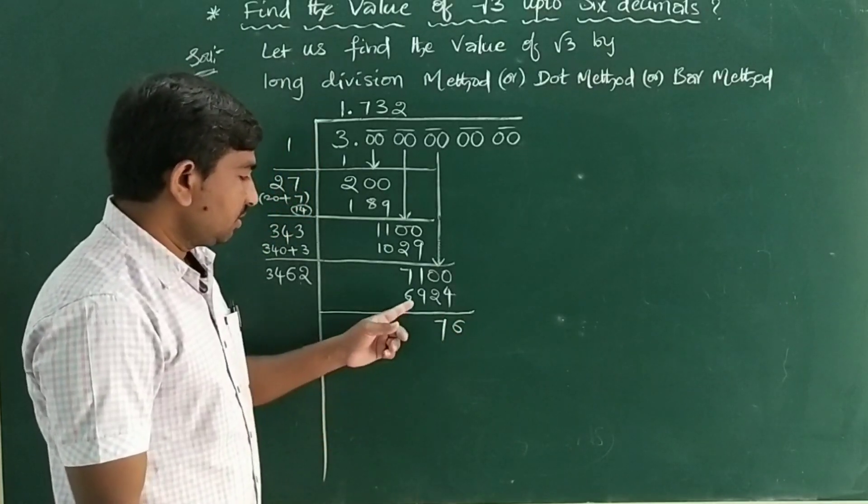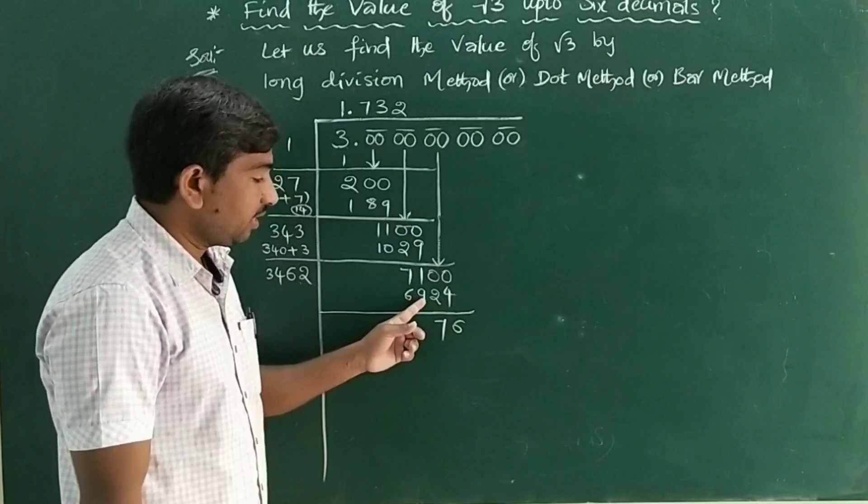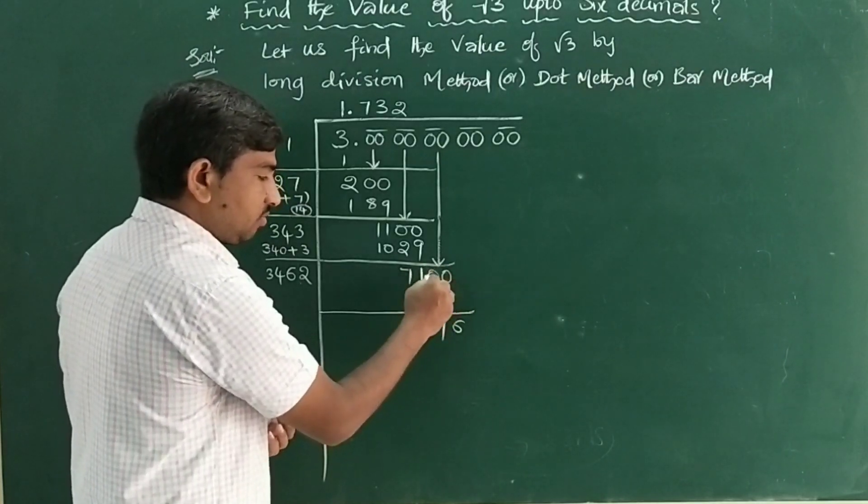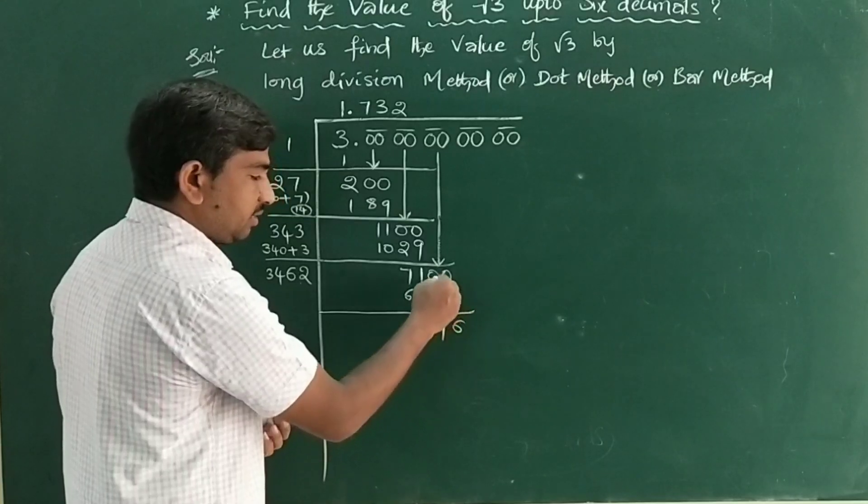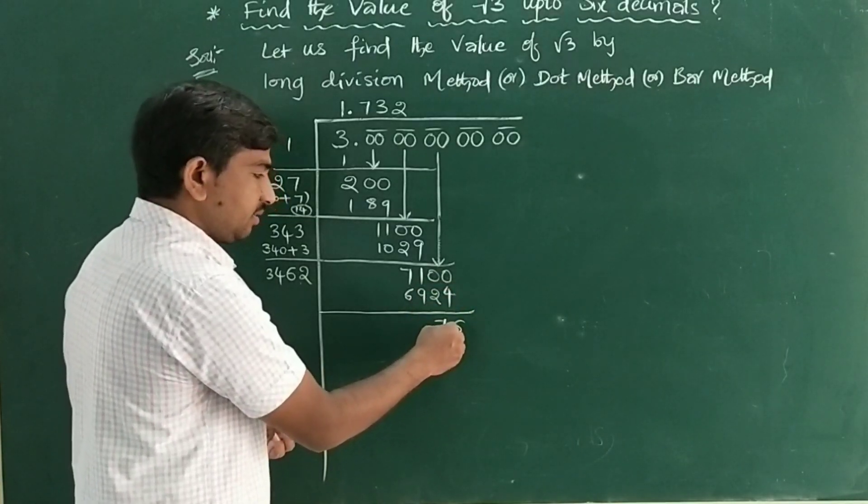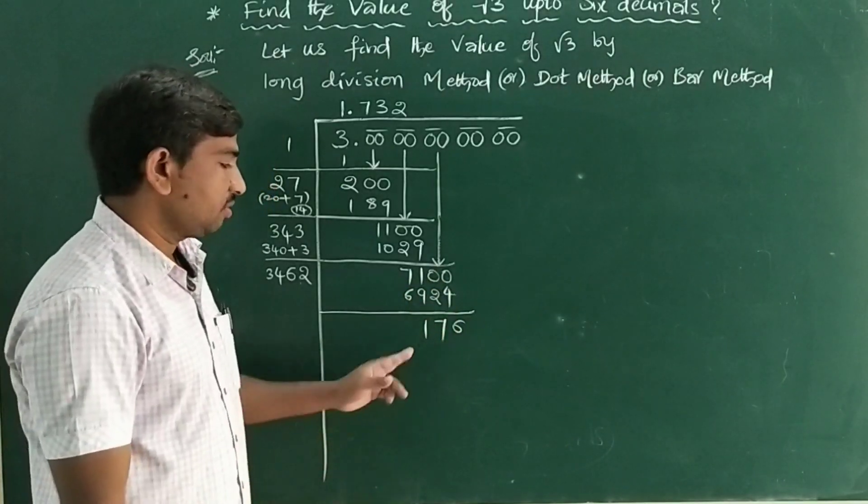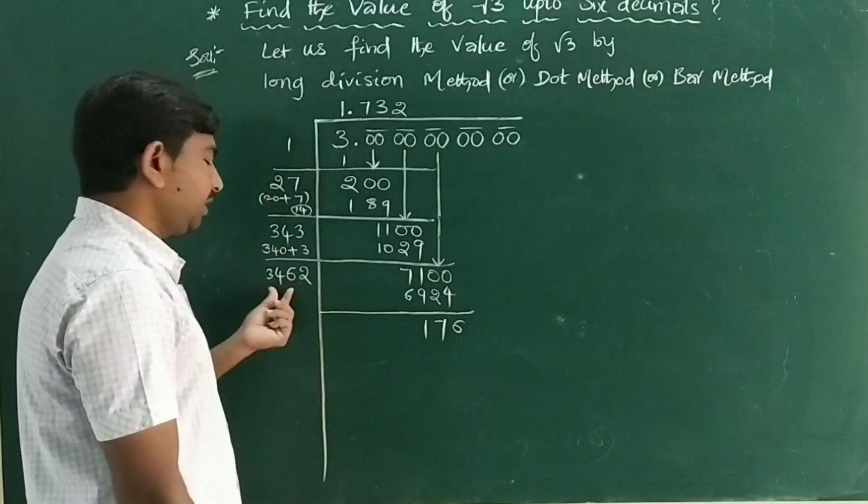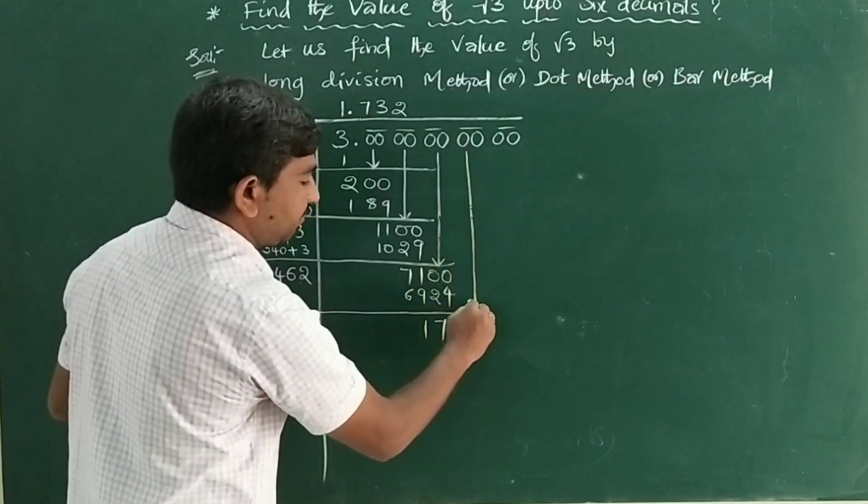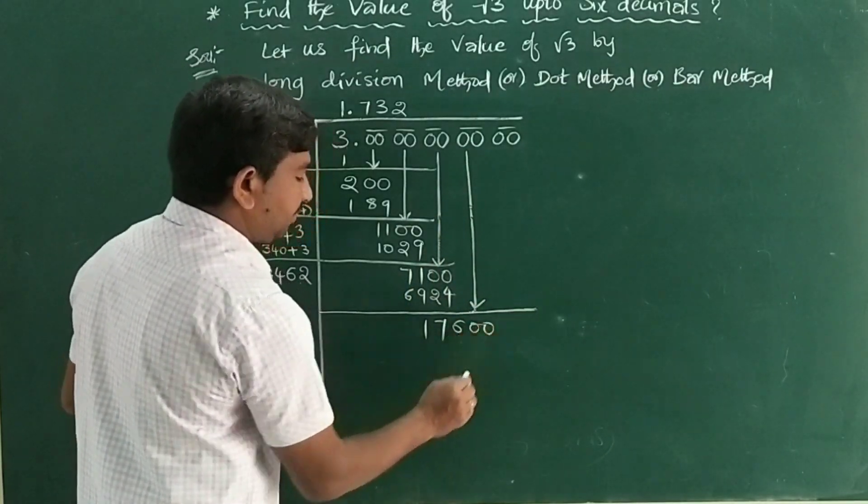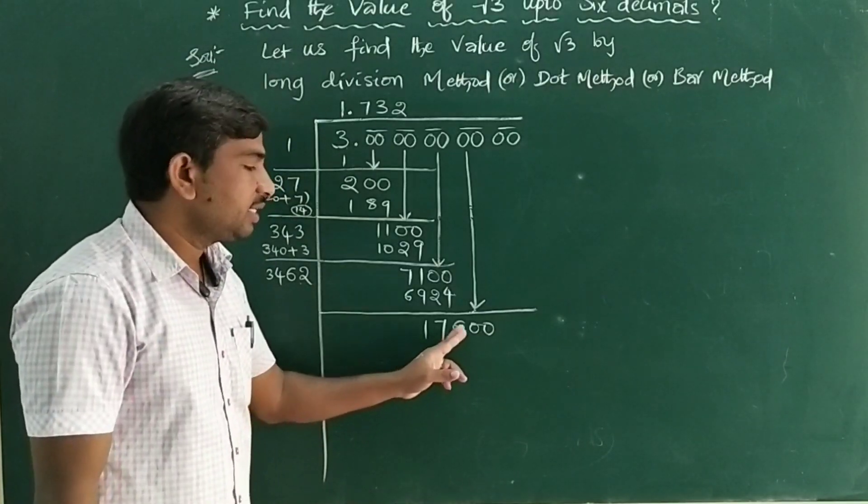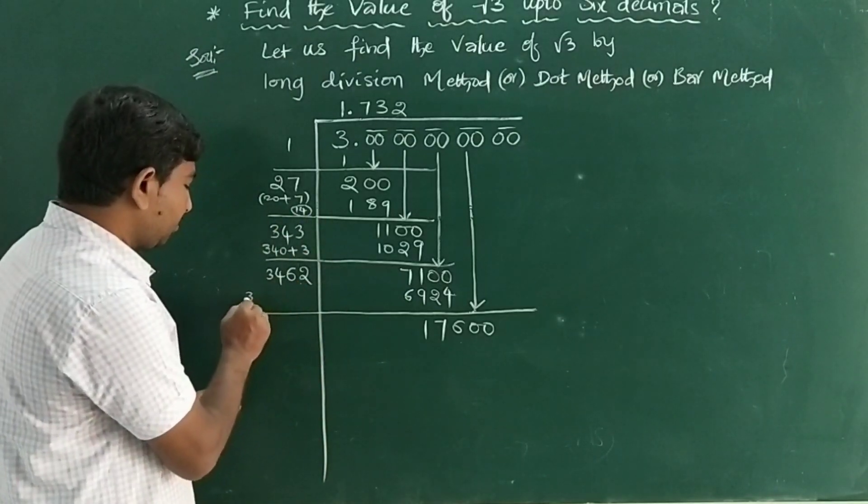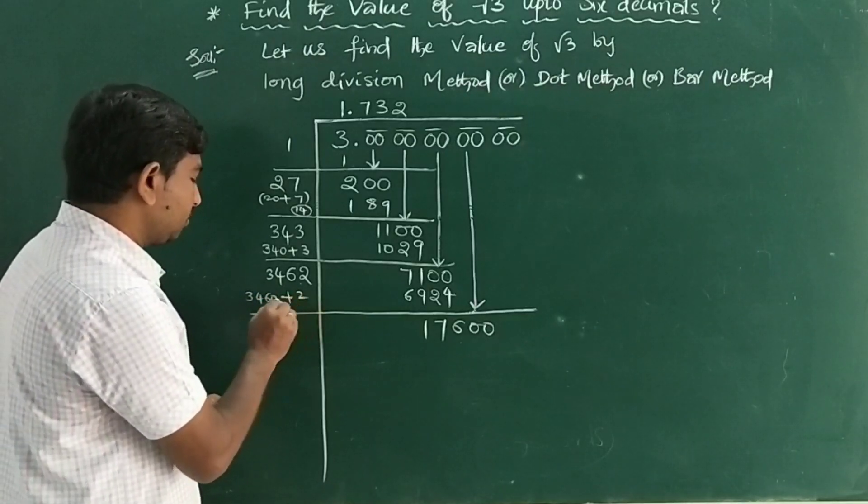3462×2 means: 2×2 is 4, 2×6 is 12 plus carry. Continuing the multiplication... we get the result. Subtracting gives us 176. 176 is very less than 3462, so carry one more pair. As per the process, this number becomes 3460 plus 2 (60 plus 2 is doubled, so 4). Finally, 3464.